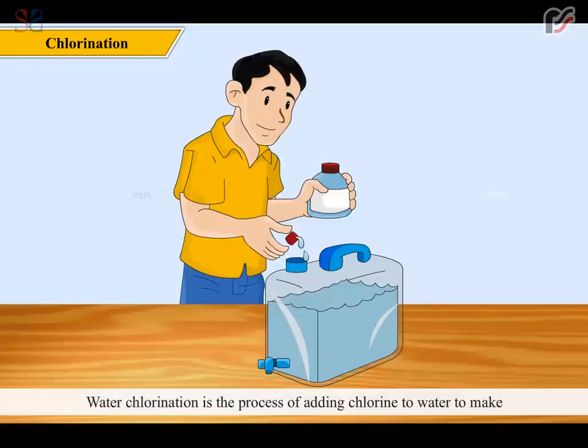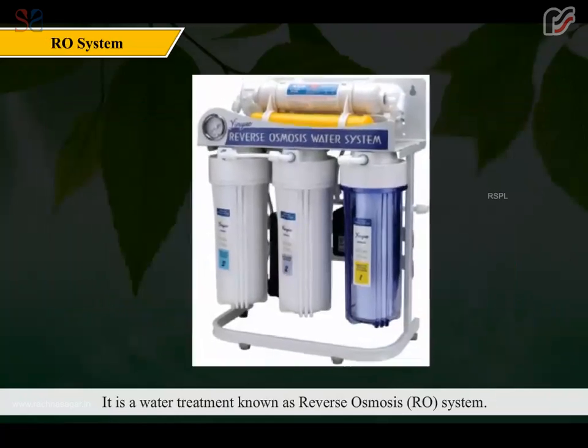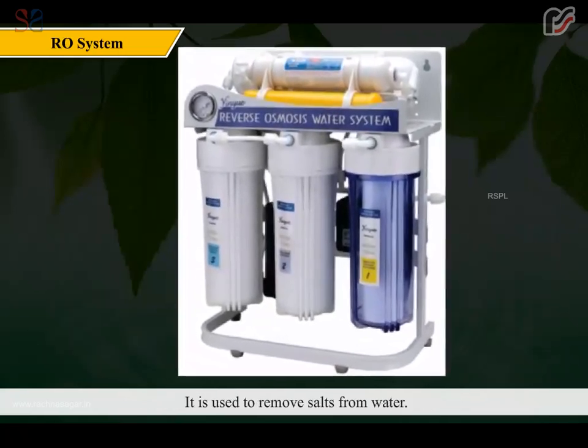Water chlorination is the process of adding chlorine to water to make it fit for human consumption. Water that has been treated with chlorine is effective in preventing the spread of water-borne diseases. It is a water treatment known as reverse osmosis, RO system. It is used to remove salts from water.